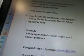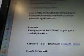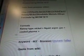It says Formula. I just changed it two seconds ago and added another video because there's this little formula in the bottom showing how to do the bendable metals. The formula from that video was Rainy Type Nickel plus Liquid Argon Gas plus Cooled Plasma, plus the keyword BET, Bronner, Emmett, Teller.